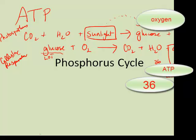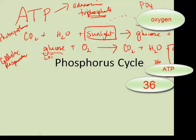That explains a little bit about why ATP is essential to life. The P stands for phosphate — adenosine triphosphate. So there's the phosphate, and the phosphate group is PO4.